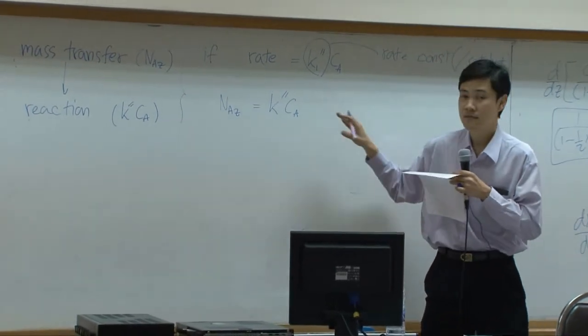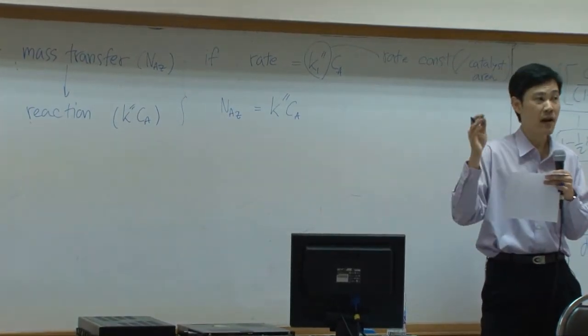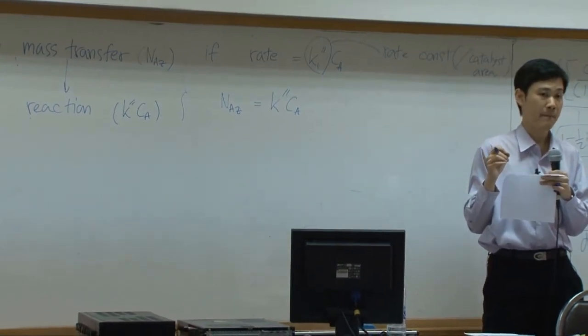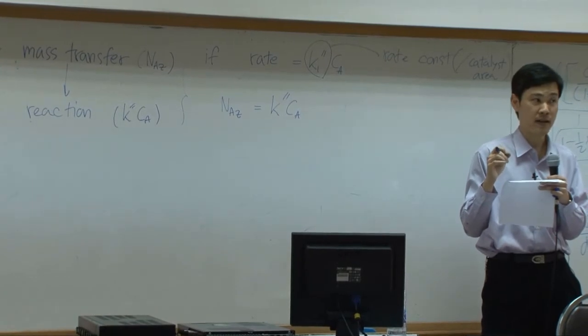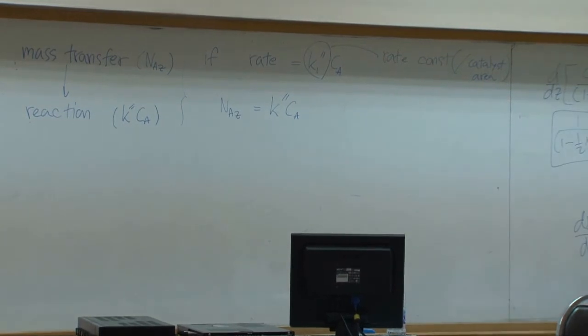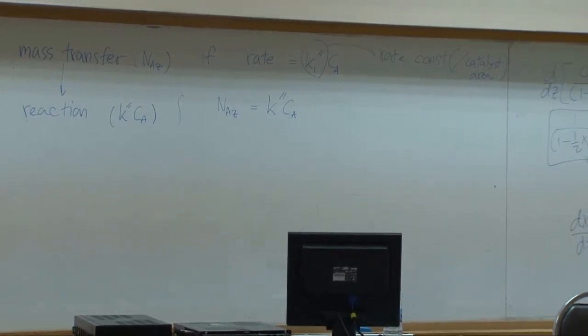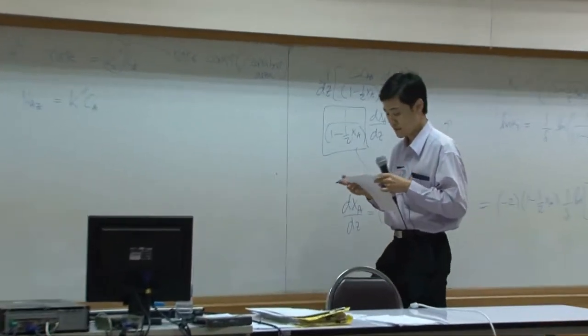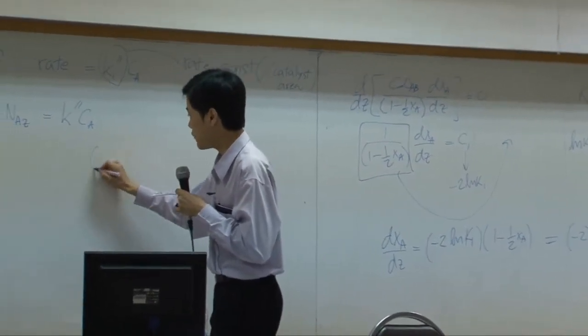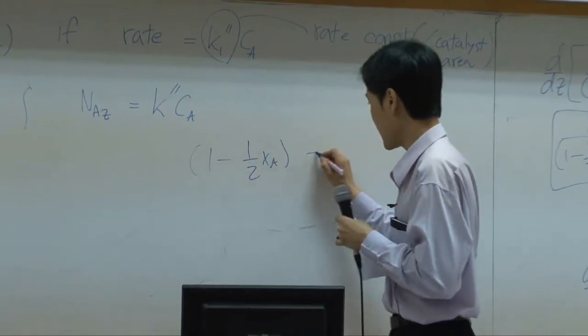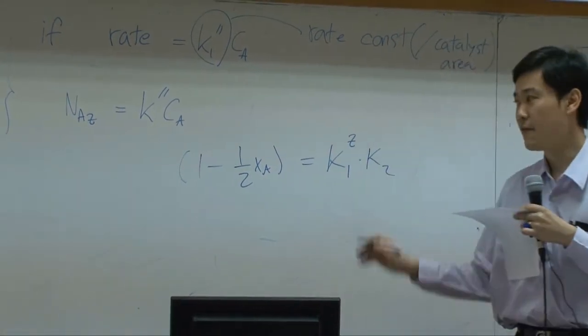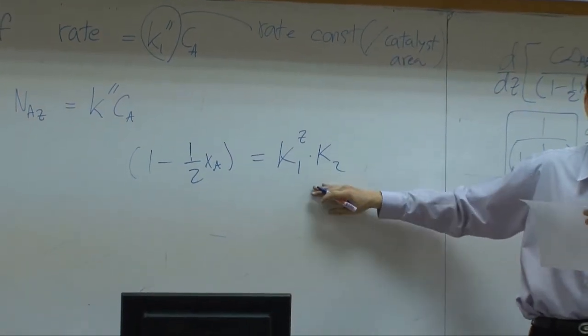Now, from this, do we need to redo everything? Do we need to redo the shear balance? No, shear balance is supposed to be the same. Do we need to redo the combined flux? Do we need to change this equation? No, everything will be the same. Therefore, up to the integration you still have (1 - 1/2 xa) = k1^z × k2. Everything up to this point does not change.